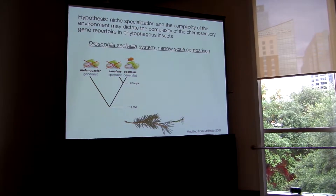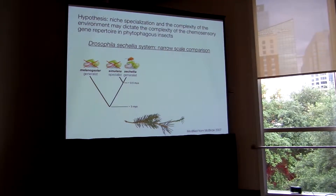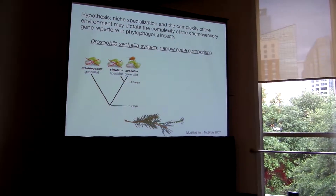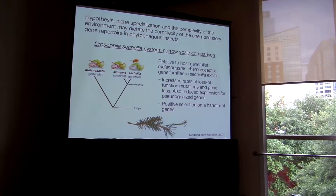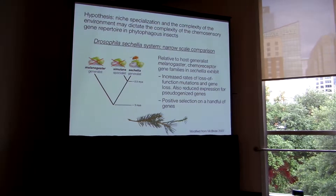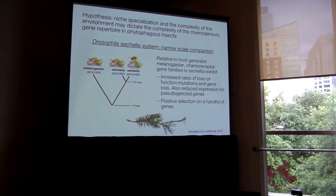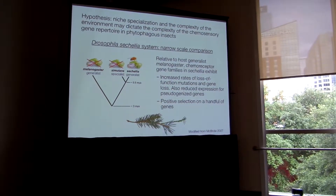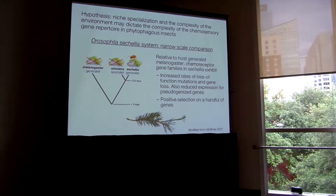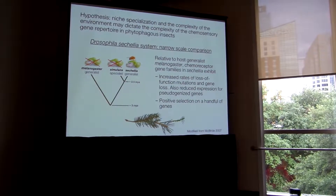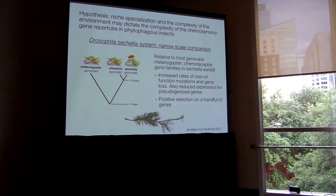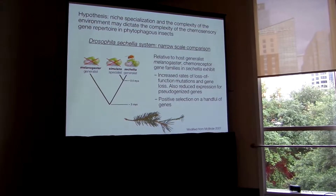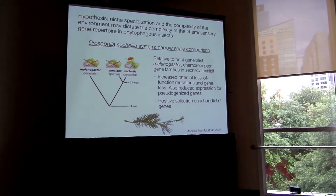Sechellia is a close relative of Melanogaster that specialized on one type of toxic fruit. A series of studies have shown that relative to Melanogaster, Sechellia chemoreceptor genes have undergone increased gene loss and pseudogenization. And since the ancestral state is being a generalist that avoids this fruit, it seems possible that specialization in this case is associated with a smaller, less diverse gene family.